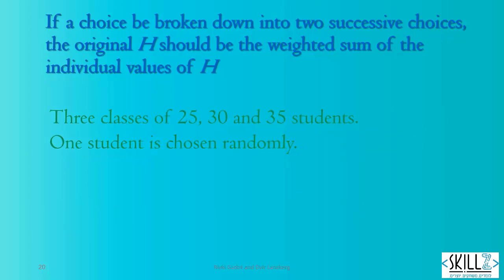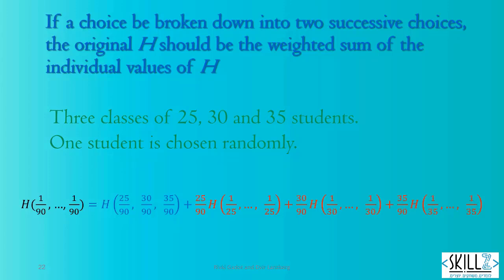The entropy of choosing one student out of 90 is H of 90 events of equal probabilities of 1 divided by 90. Or the entropy of choosing a class, plus the weighted entropy of choosing a student from the chosen class.